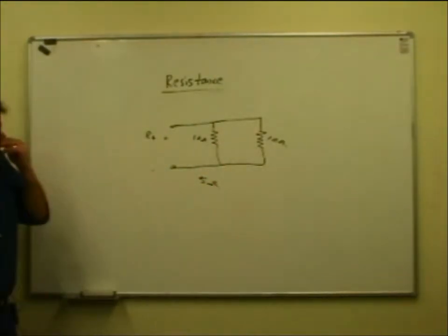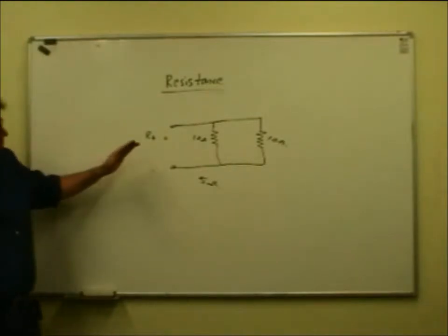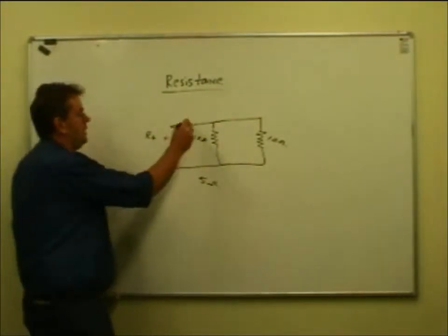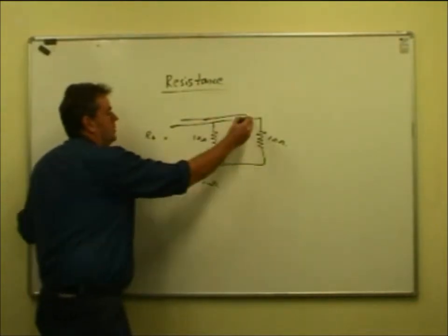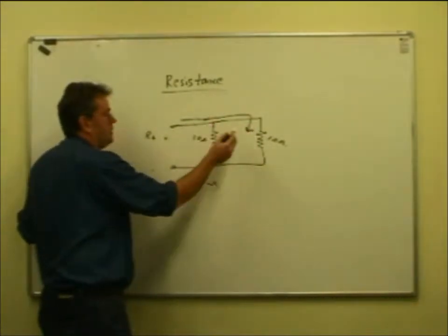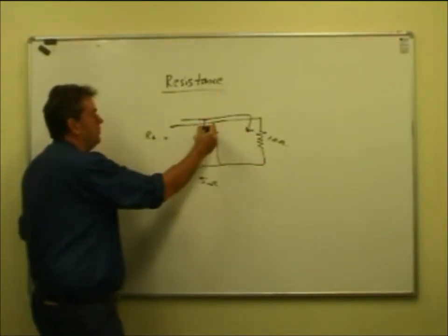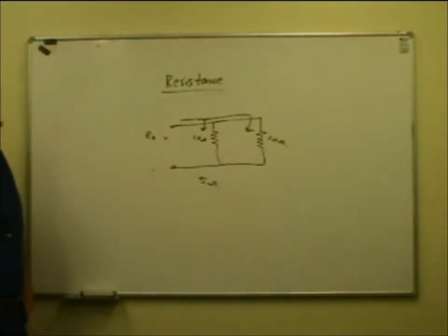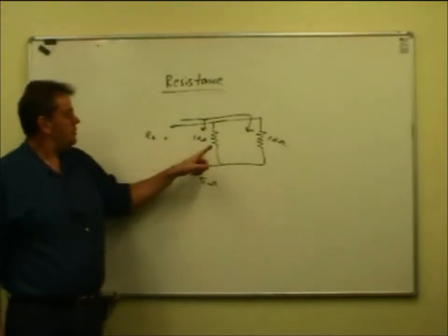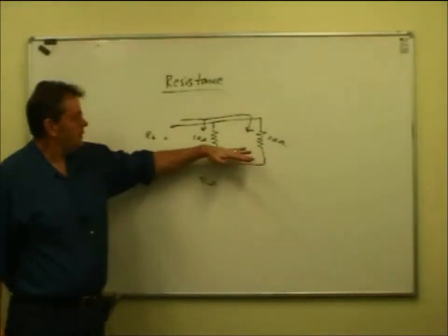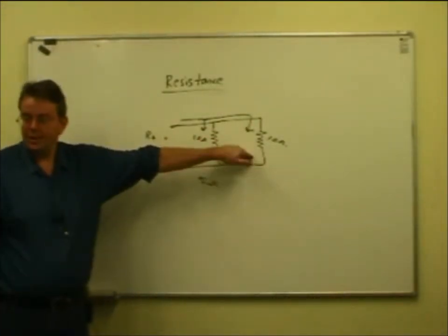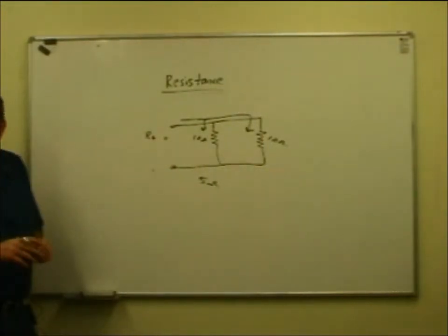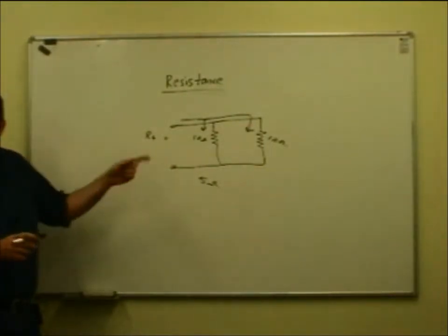You can kind of see, without going into the maths, that makes sense because the current has got an easier path to flow. When the current flows into the circuit, some of it will go down there. The resistors are the same, so the same amount will flow through there as flows through there. A 20 ohm and a 20 ohm in parallel is 10 ohms.